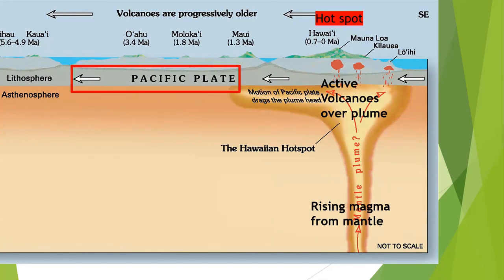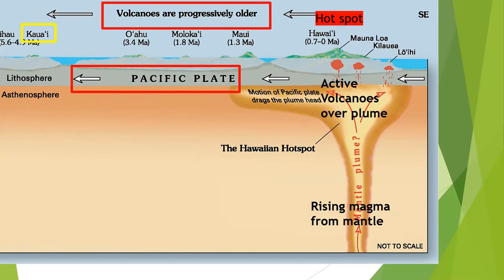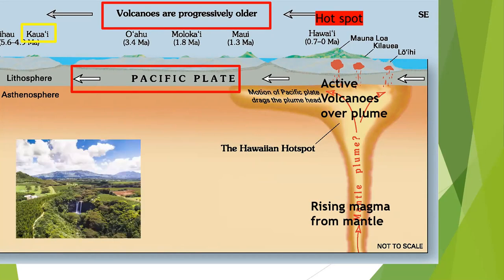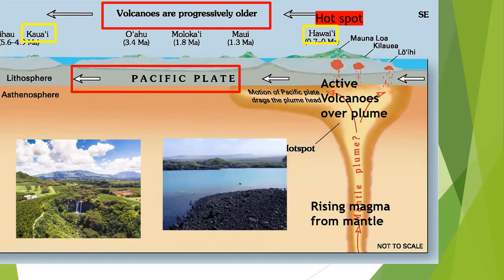However, the Pacific plate keeps moving, and as you go further and further away from the hot spot, the volcanoes are progressively older. Hawaii, which is over 5 million years old, is very lush, because in 5 million years you have plenty of time to create soil. However, Hawaii is still quite barren in places, because it is forming even as we speak.